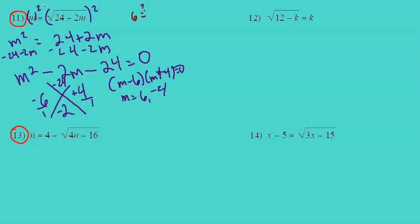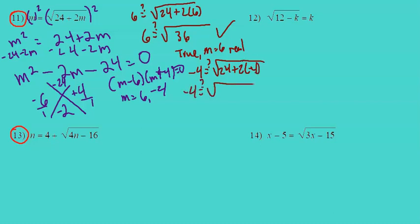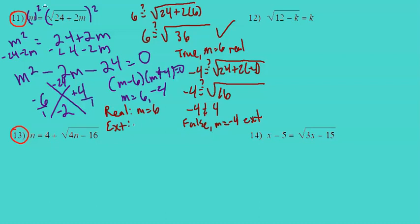Let's check those. Is 6 equal to the square root of 24 plus 2 times 6? Is 6 equal to the square root of 36? Yes, that's true. Now let's check negative 4. Is negative 4 equal to the square root of 24 plus 2 times negative 4? Is negative 4 equal to the square root of 16? No, because negative 4 does not equal 4 — it's false. So m equals negative 4 is extraneous. Real: m equals 6. Extraneous: m equals negative 4.